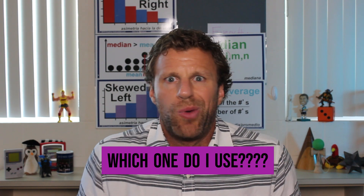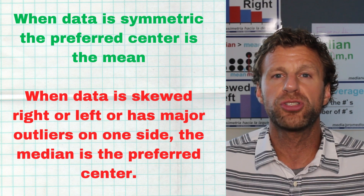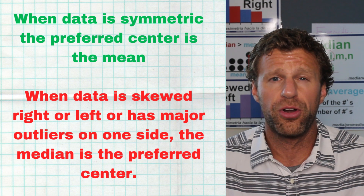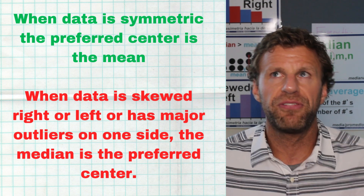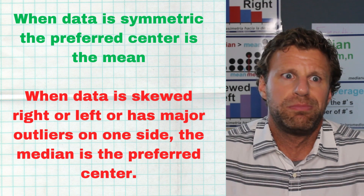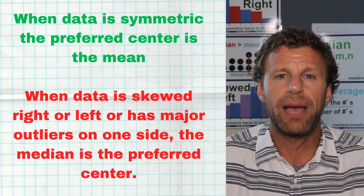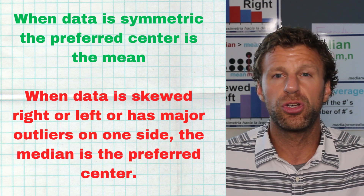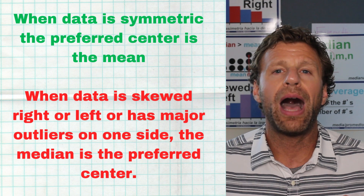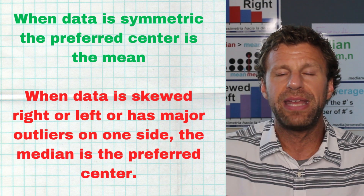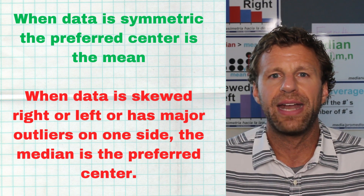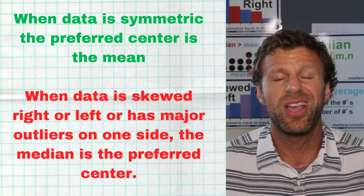A common question students have is: which measure of center do I actually use? That comes down to the shape of your data. When your data is nice and symmetric, we prefer to use the mean. The mean is actually the preferred measure of center we would always like to use, but because it gets impacted by outliers and skewness, we might not always recommend it. If your data is skewed left or skewed right, or has major outliers, use the median — it will be more truthful to what the center of the data actually is, since it's not impacted by skewness or outliers.